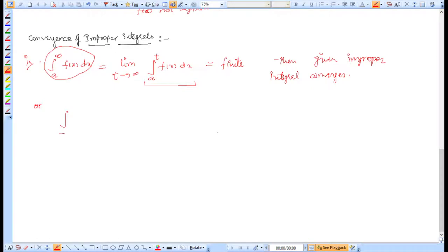In the second case, if we have minus infinity to b of g(x)dx, then we simplify it as limit t1 tends to minus infinity, integral from t1 to b of g(x)dx. If this value is finite, then again we can say the given improper integral converges.